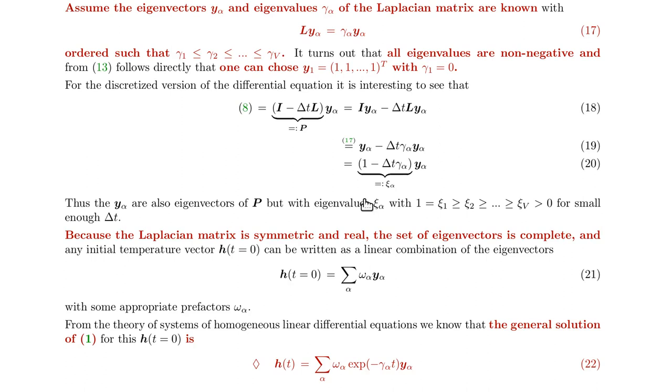Since matrix L is symmetric and real, we know that the eigenvectors as well as the eigenvalues are real. The set of eigenvectors is complete and they are orthogonal to each other. It's not always given that a matrix has a full set of eigenvectors, but symmetric matrices have.